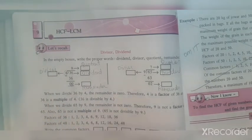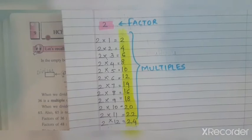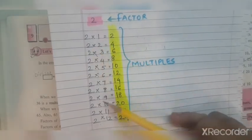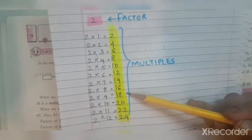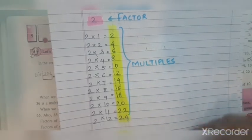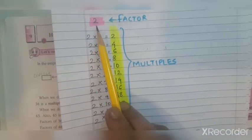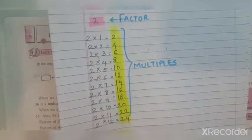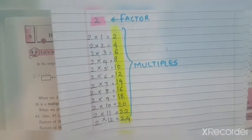Now what are factors and multiples? I will show you with the help of a table of 2. I have written the table of 2 up to 12: 2, 4, 6, 8, 10, 12, 14, 16, 18, 20, 22, 24, and so on. All these numbers highlighted in yellow are the multiples of 2, and 2 is the factor of all of them — 2 is the factor of 2, 4, 8, and so on.